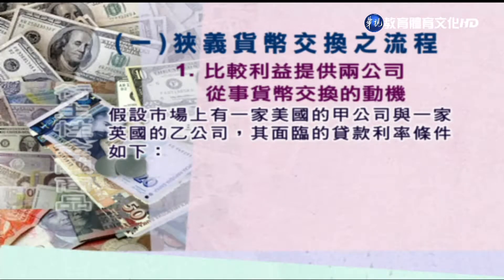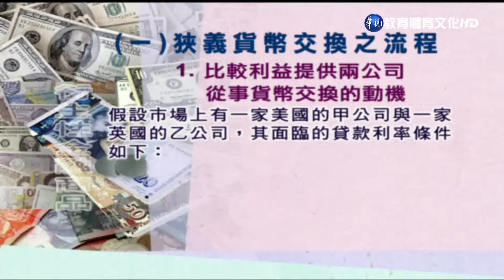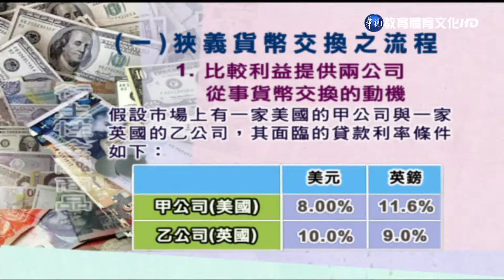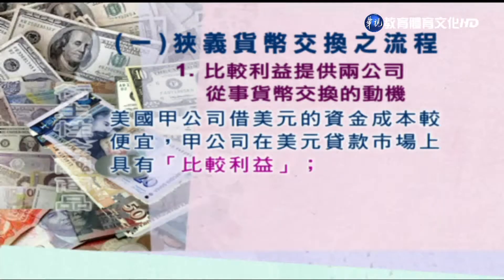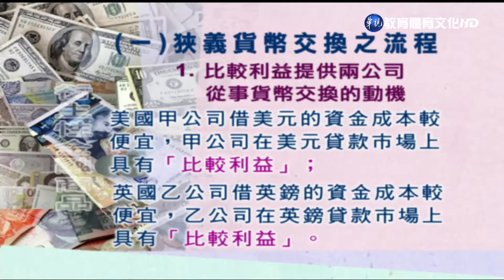假设市场上有一家美国的甲公司，跟一家英国的乙公司，面临的贷款利率条件如下。甲公司因为是美国公司，所以它在美元的借贷上比较便宜，只需要8%，但它去借英镑要花11.6%。而乙公司因为是英国公司，所以它借英镑比较便宜，只需要9.0%，但它去借美金就比较高，达到10%。因此甲公司在美元贷款市场上具有比较利益，而英国乙公司在英镑贷款市场上具有比较利益。